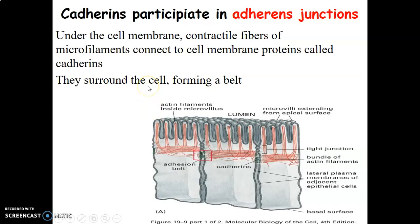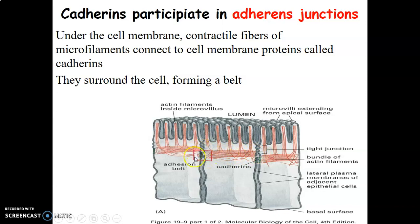Cadherins participate in formation of adherens junctions and are usually located just under the cell membrane, forming what is called the adhesion belt. Contractile bundles of microfilaments connect to cell membrane proteins called cadherins, surrounding the cell to form a belt. You can see the cadherins here with the contractile actin filaments attaching onto them.